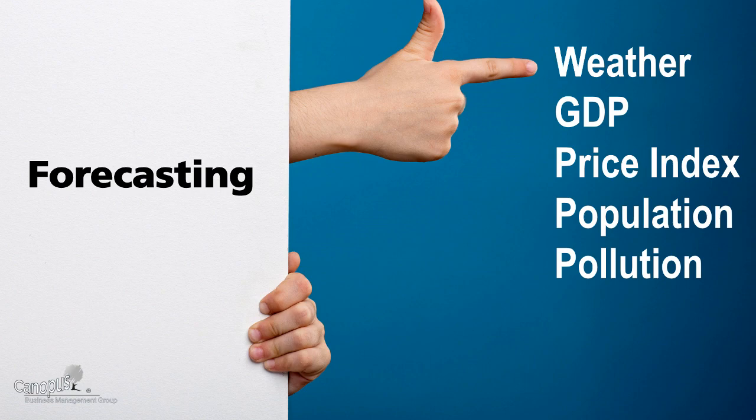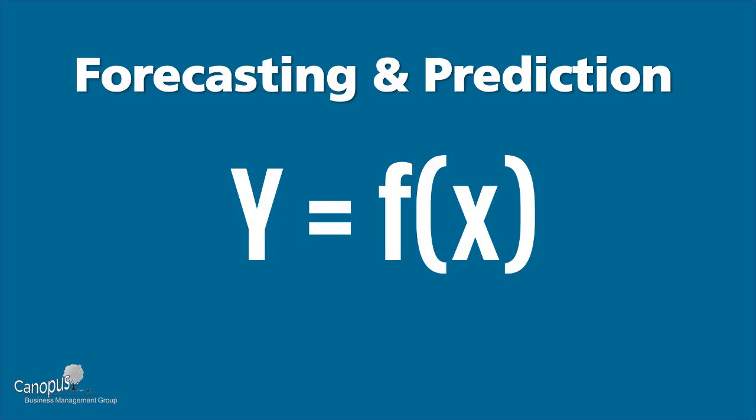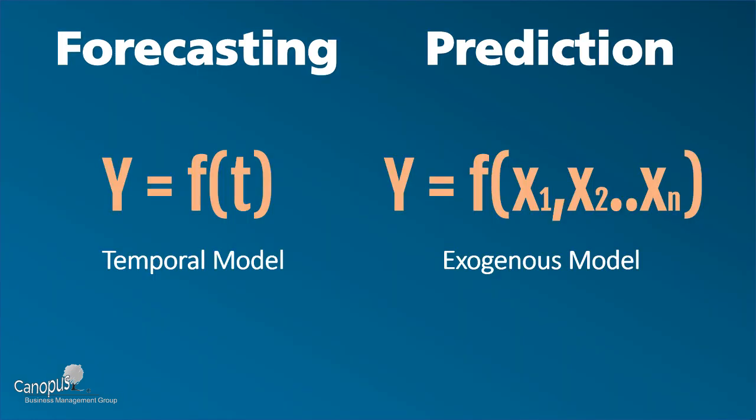Both of them use statistical modeling to predict the future. We build a model with a target variable — that's the outcome that we want to predict or forecast — as a function of several input variables. This is commonly represented as y is a function of x. But in the case of forecasting, we have the target variable as only a function of time.